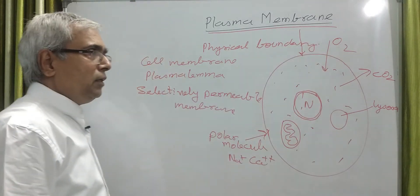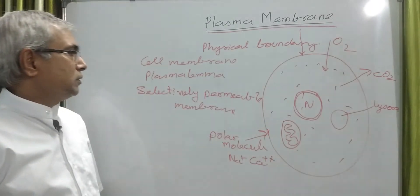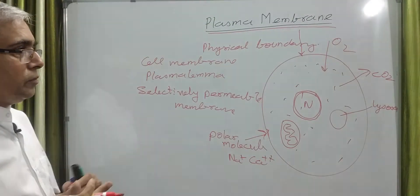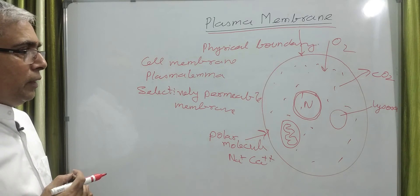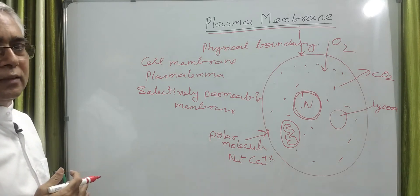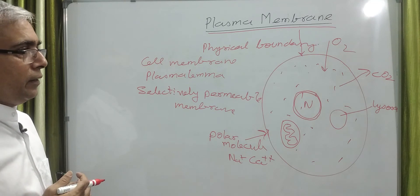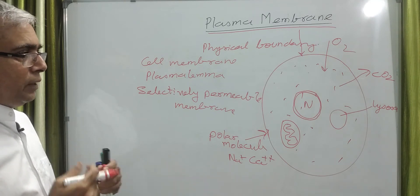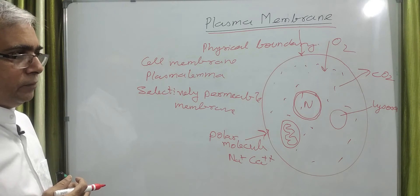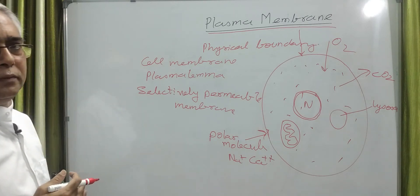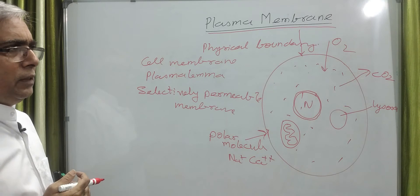Secondly, it allows certain substances, or you can say it selects substances - that means it regulates the transport of various substances through the membrane. In fact, no activity inside the cell can go on without involvement of the membrane. That's why plasma membrane is the most important structure, because it performs many functions.